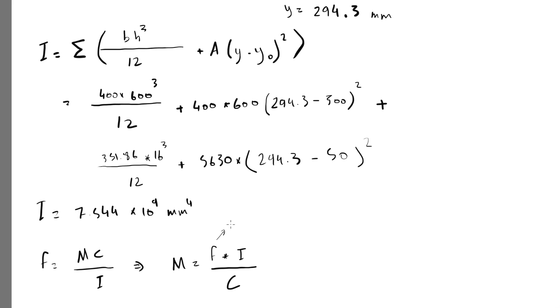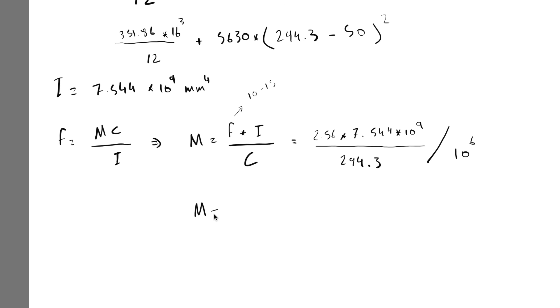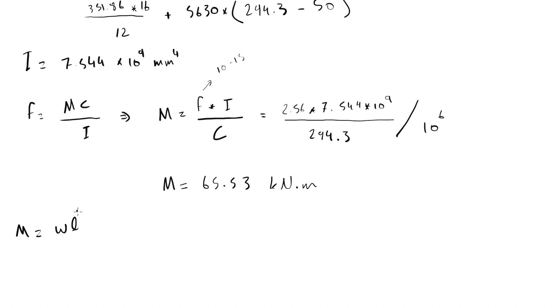If you want to calculate accurately, then I have provided two ways with ACI code and Eurocode in the previous video of unreinforced concrete beams, and you can follow the same procedure to calculate it. Or you can assume 10 to 15 percent of the concrete compressive strength. I'll use the value which I found in the previous example, which is 2.56 multiplied by I, 7.544 × 10⁹, divided by c which is 294.3. And I divide all equation by 10⁶ for the sake of unit conversion to get it in kilonewton meter instead of newton millimeters. Solving the equation, M equals to 65.53 kNm.